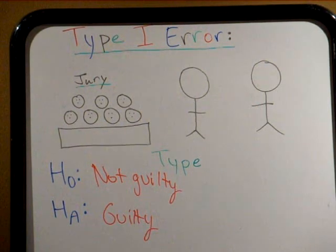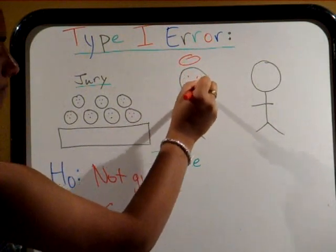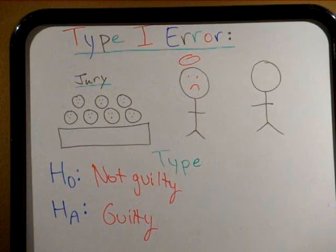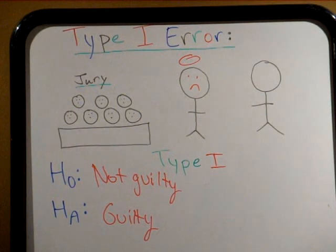If a certain individual is found guilty when he is not, then we are committing a type 1 error. That innocent person could be punished incorrectly.